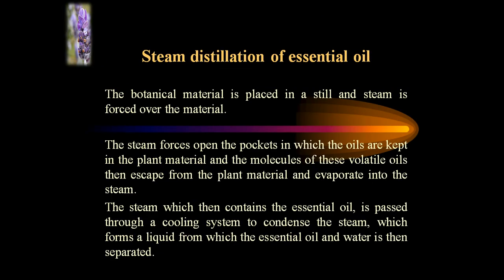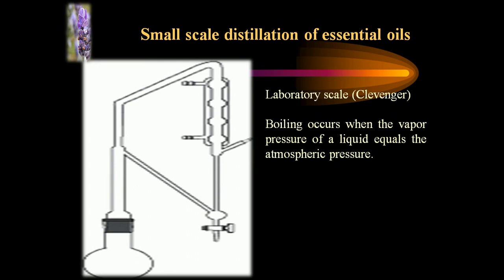In the steam distillation process of essential oil extraction, the botanical material is placed in a still and steam is passed over the material. The steam forces open the oil cells kept in the plant material, and the molecules of these volatile oils then escape from the plant material and evaporate into the steam. The steam, which then contains the essential oil, is passed through a cooling system to condense the steam, forming a liquid from which the essential oil and water are then separated. The Clevenger apparatus is used in laboratory-scale isolation of volatile oils, in which boiling occurs when the vapor pressure of the liquid equals atmospheric pressure.